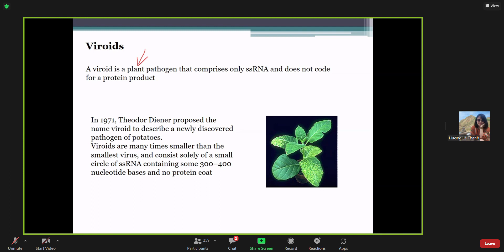Viroids are plant pathogens that comprise only single-stranded RNAs and do not code for protein products. The viroids are many times smaller than the smallest virus and they consist solely of small circles of single-stranded RNA containing some 300 to 400 nucleotide bases and no protein coat. In the previous one, we have the prions that are made of proteins. Next, we have only single-stranded RNAs that can cause disease without a protein coat. There are two other types that can affect cells - it's not really a virus, but part of the virus that can cause disease.